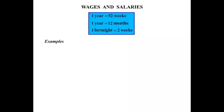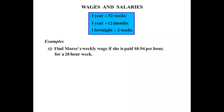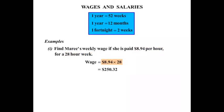Let's look at some examples. The first one: we need to find Marie's weekly wage if she is paid $8.94 per hour for a 28-hour week. She's getting $8.94 per hour — that means every hour — and she's working for 28 hours. So simply we multiply: 8.94 times 28, and we get $250.32.